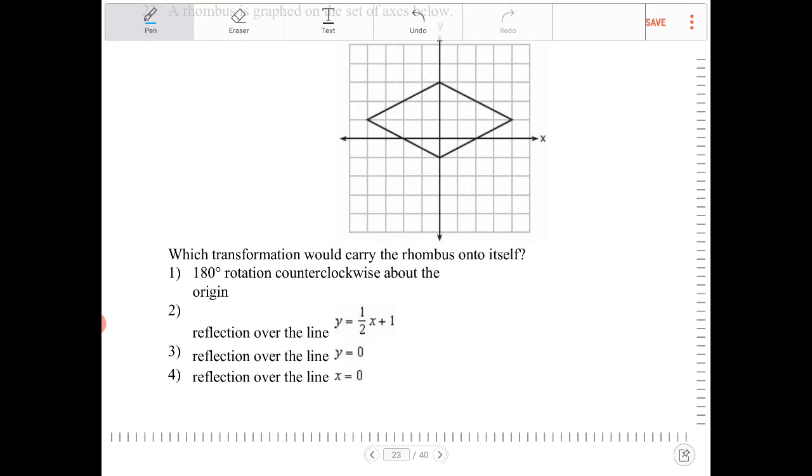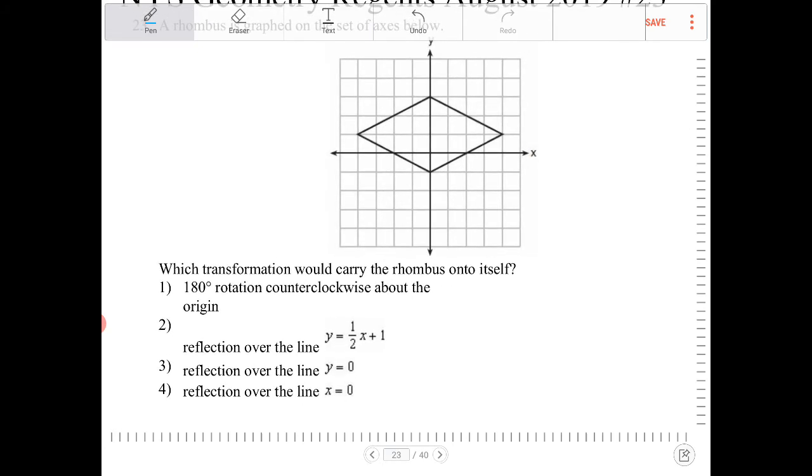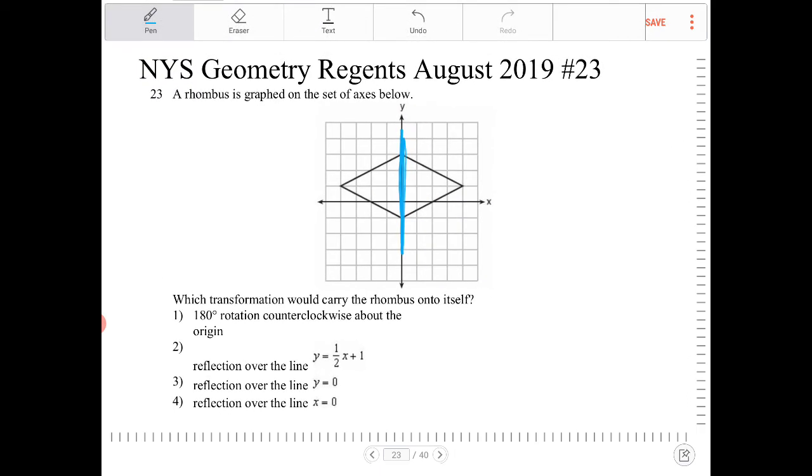And the last one, reflection over the line x equal to 0. So yes, this is one of the lines of reflection that I had talked about in the beginning. So if we reflect this, this point will land on itself.